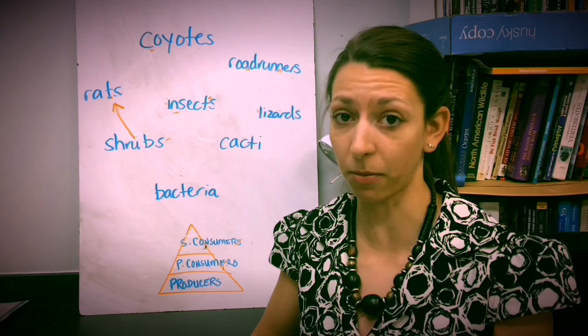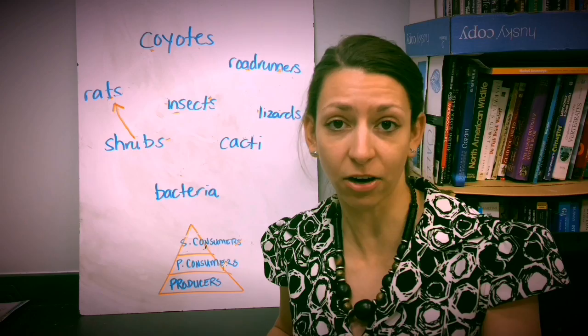And there could be multiple pathways, and organisms can be both a primary and a secondary consumer, depending on at which trophic level they are eating.